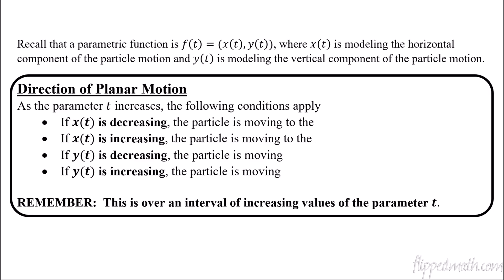It's not too bad. There's a lot of things we're going to just use from skills we did in Algebra 1. But first we're going to start off with talking about some more things on direction of planar motion, then we'll get into the rate of change stuff. So just as a reminder, we've got this parametric function. Just remember that x(t) is modeling the horizontal component and y(t) is the vertical component. So if we want to know, for a parametric function, if the motion is moving left or right, then what we have to look at is the individual components.